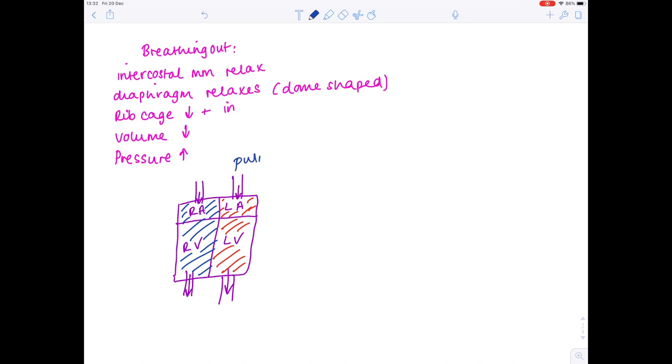Well, that will be the pulmonary vein. Oxygenated blood leaves the heart via an artery, which is the aorta. Deoxygenated blood returns to the heart in the vena cava. Deoxygenated blood goes to the lungs for oxygenation via the pulmonary artery.